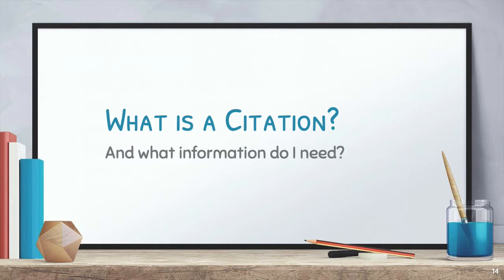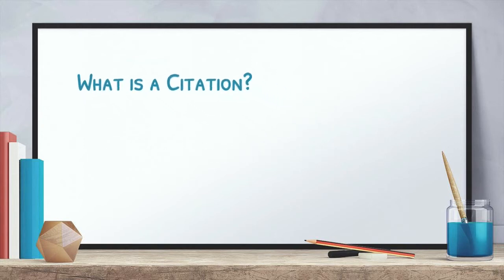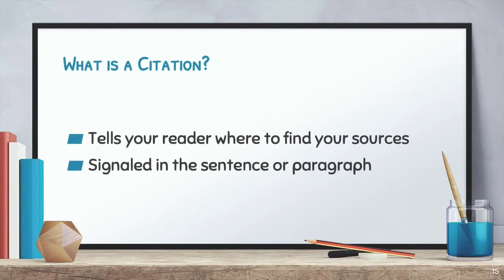But what is a citation? And what information do I need? A citation is the information the person reading your paper needs to be able to find your sources. When you quote or paraphrase an idea from a book, article, website, video, or some other source, it's important to tell your readers where you got the information.